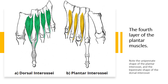The fourth and final layer of the plantar muscles includes the plantar interossei and dorsal interossei. The plantar interossei have a unipennate morphology (one head), while the dorsal interossei have a bipennate morphology (two heads). There are three plantar interossei located between the metatarsals, each arising from a single metatarsal.